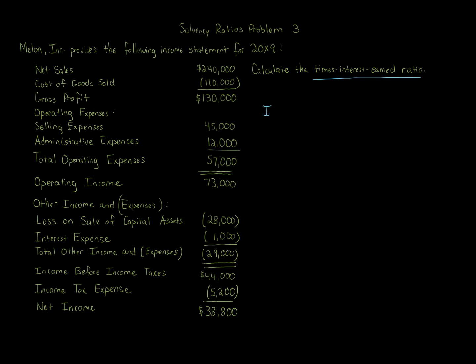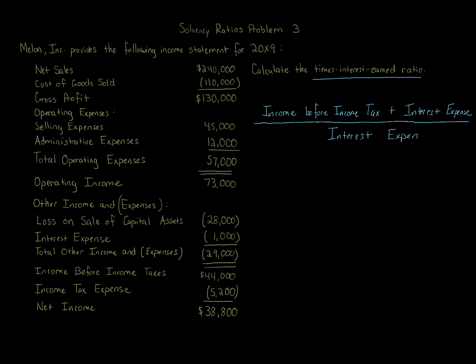The calculation is: income before income tax — so before you subtract income tax — plus interest expense. This can also be described as EBIT or EBITDA. The numerator is income before income tax plus interest expense, and the denominator is the interest expense. If you're given net income, you can back into the numerator by adding certain items back in, which I'll show you. The numerator is where this specific ratio can be challenging.